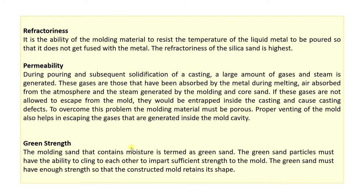Now the properties of sand: Refractoriness means the sand should resist high temperatures. Permeability means it should have escaping points for hot gases entrapped during the molding process. If the sand has moisture, water particles, or binder elements, at high temperature a phase change from liquid to gas will occur and the gas will try to escape. If all ways are closed it will be trapped inside the mold, sometimes producing porosity — a casting defect. So sand with good permeability allows gases to escape.